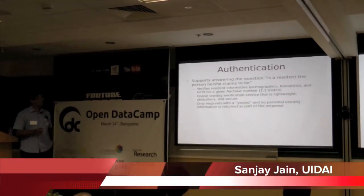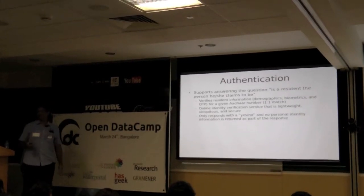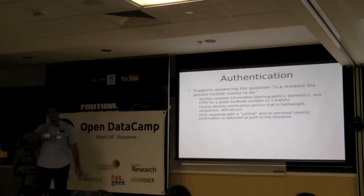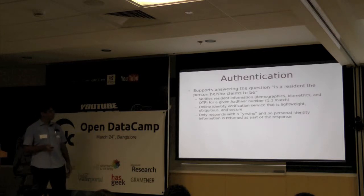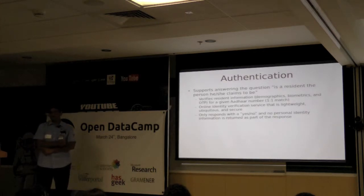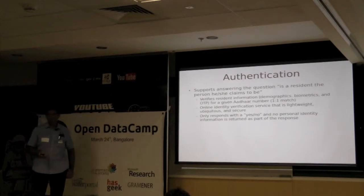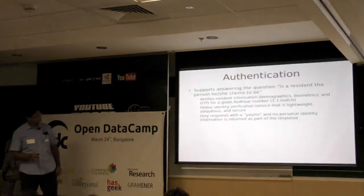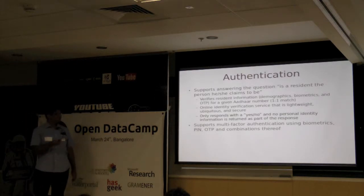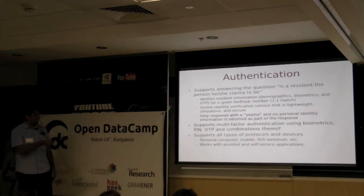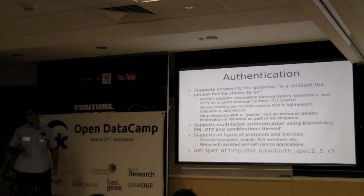Aadhaar authentication is about confirming identity. When a person enrolls, they tell us who they are and we ensure they are unique. Authentication is about confirming that identity when they later claim it. One key principle is that we only respond with a yes or no — we don't give out any personal information during this process, and it's online. We support multi-factor authentication using biometrics, PIN, OTP, and any combinations of these, with all sorts of protocols and devices. The API spec is public — we encourage you to look at it, give feedback, or use it.